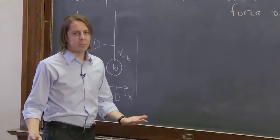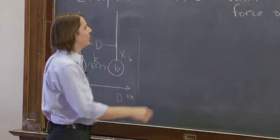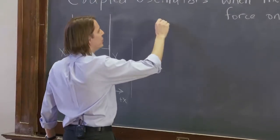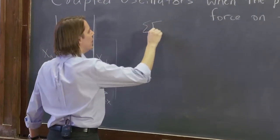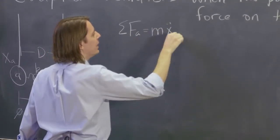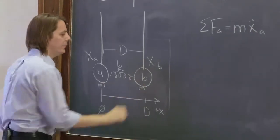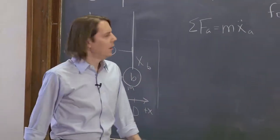So to figure out how they move, we just apply Newton's second law. They still obey Newton's second law. Just because they're coupled doesn't mean that doesn't apply. So we say the sum of the forces on A equals the mass times the acceleration of A, x double dot A. They both have the same mass also. Same mass.